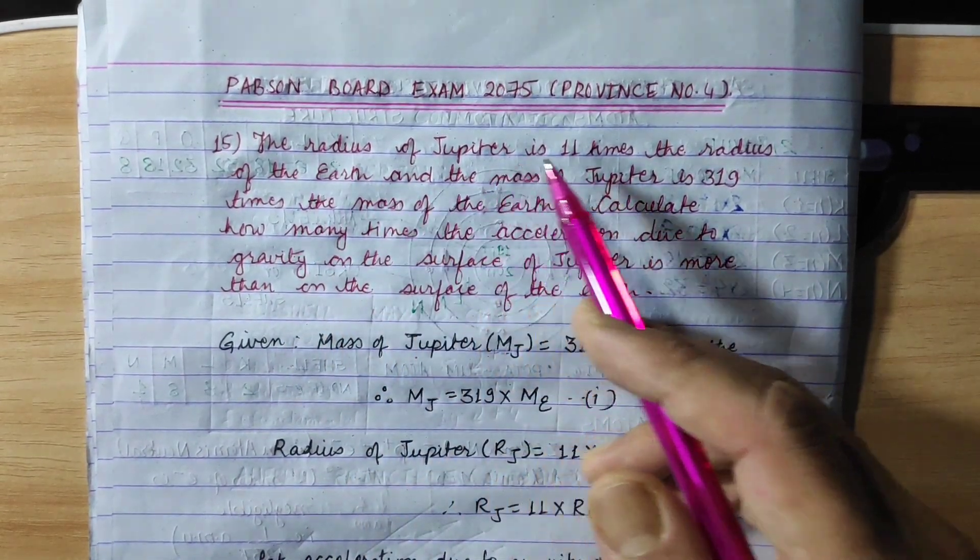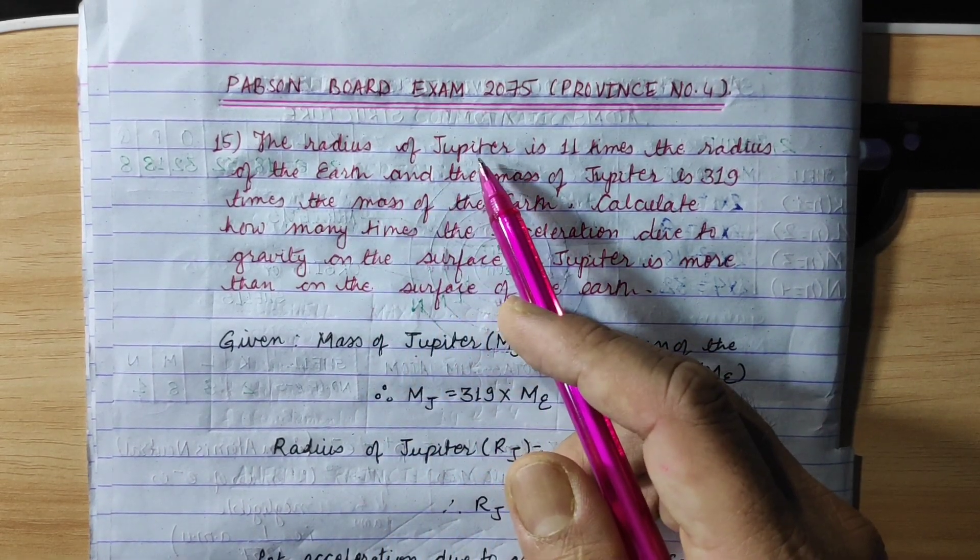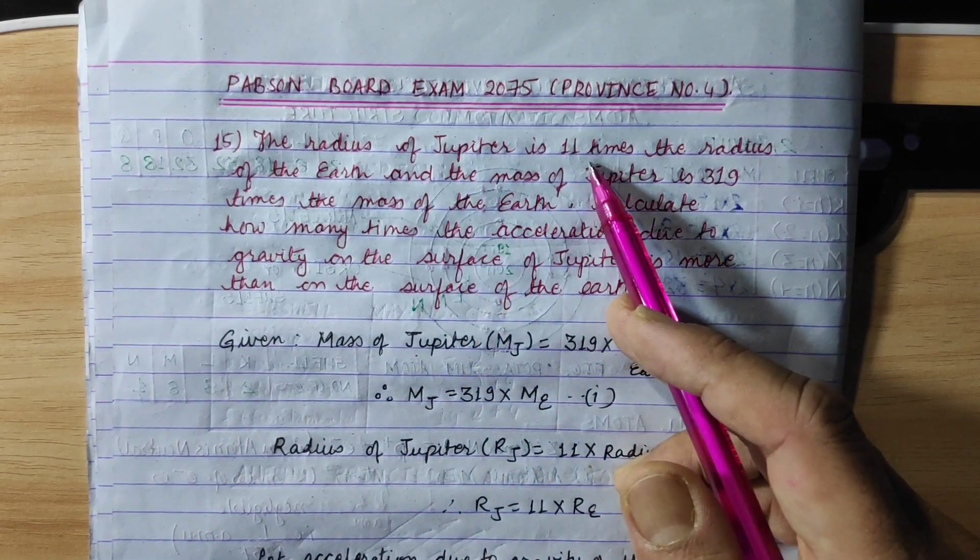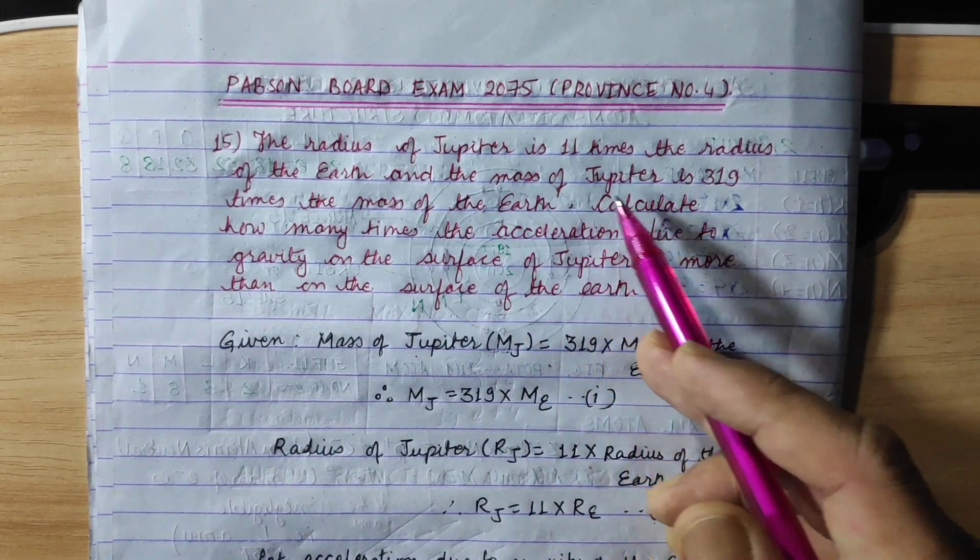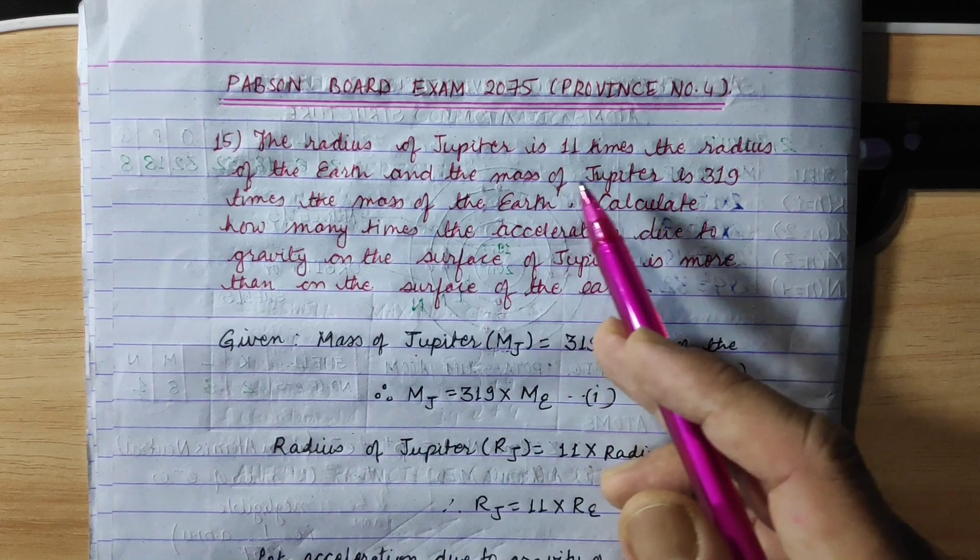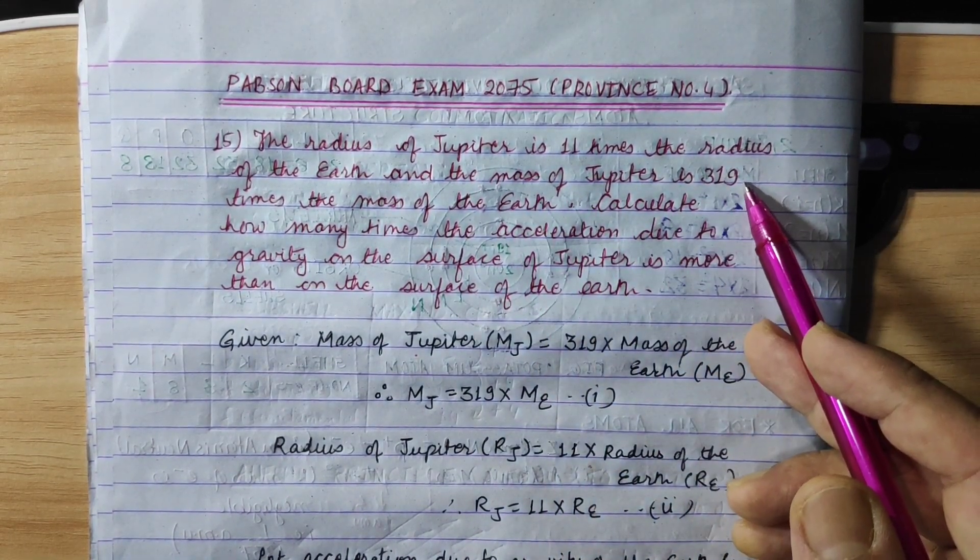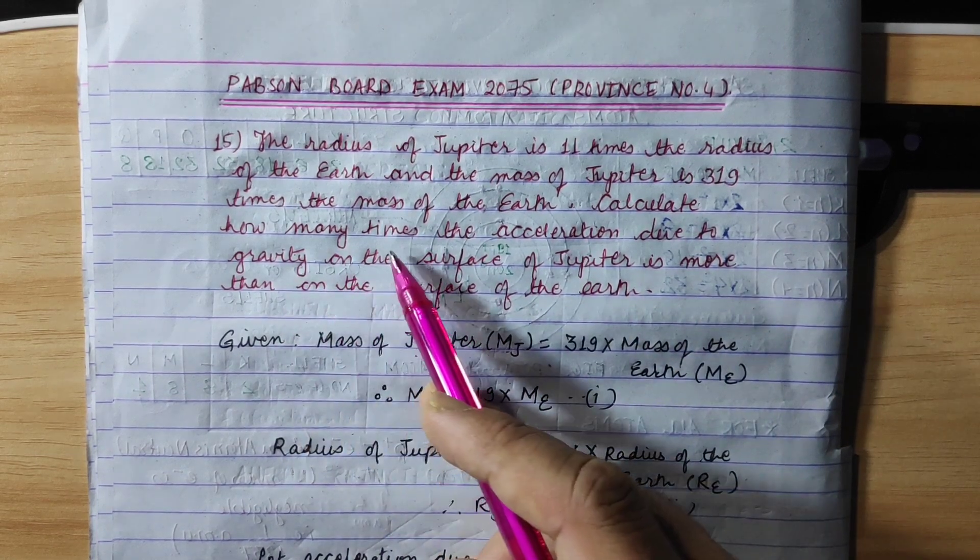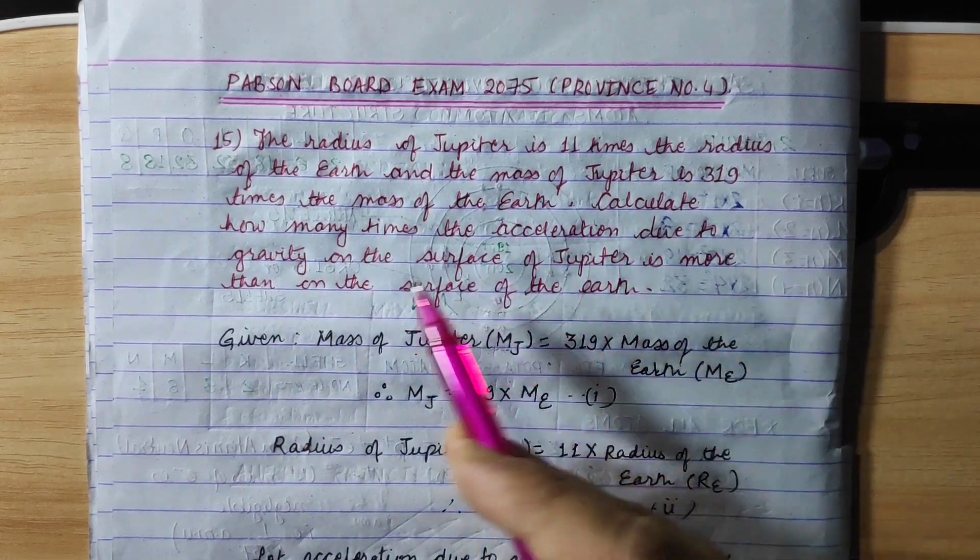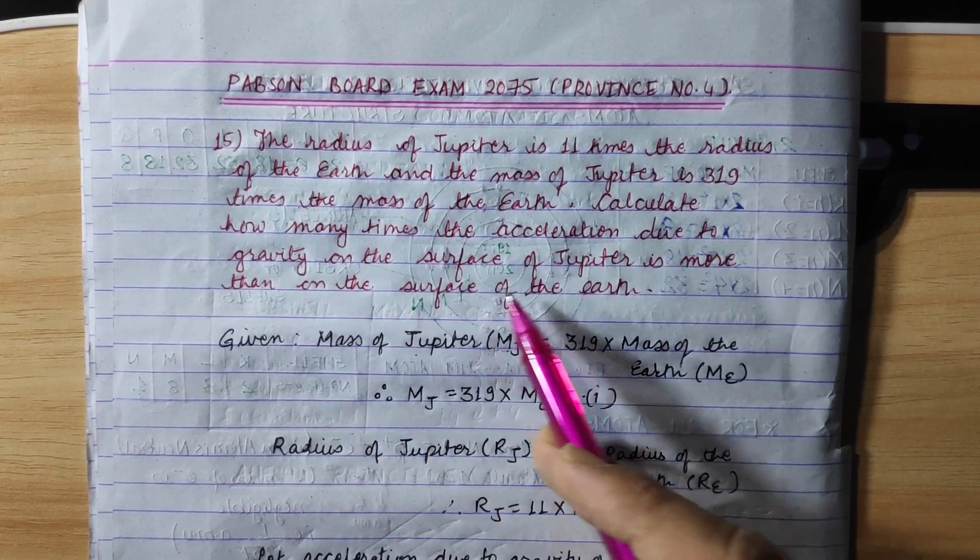The radius of Jupiter is 11 times the radius of the Earth and the mass of Jupiter is 319 times the mass of the Earth. Calculate how many times the acceleration due to gravity on the surface of Jupiter is more than on the surface of the Earth.